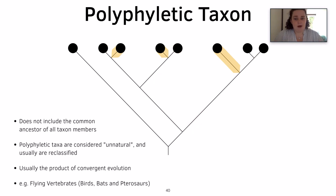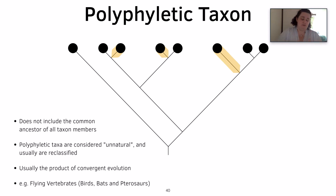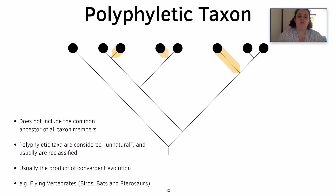And finally we have a polyphyletic taxon. A polyphyletic taxon does not include the common ancestor of all taxon members, so they're usually classed as unnatural and are reclassified to be more like monophyletic or paraphyletic taxa. These are usually the products of convergent evolution — an example being the flying vertebrates: birds, bats and pterosaurs, which all have wings as a convergent evolution trait.